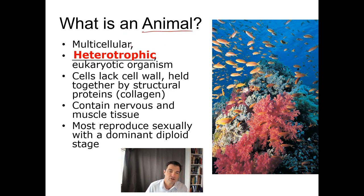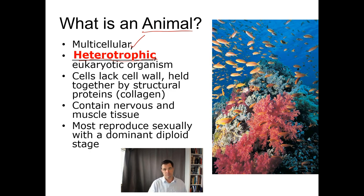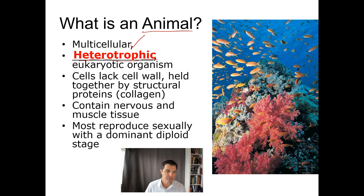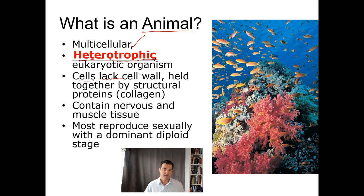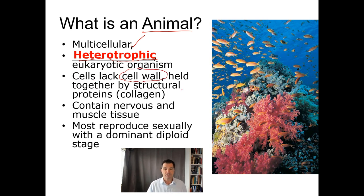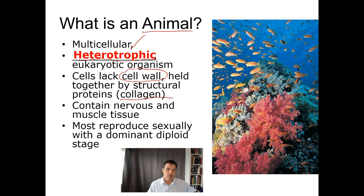By definition, animals are multicellular, eukaryotic, and heterotrophic — which means they get both their carbon and their energy source from organic molecules, like eating other things. They have cell membranes but lack cell walls. All living things have a cell membrane, but not everything has a cell wall, and animals do not. The cells are held together by structural proteins called collagen.